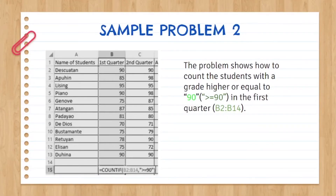In the second sample problem, we need to count the students who have a grade of 90 or below. To do this, we use: =COUNTIF(B2:B14, "<=90"). The answer to this problem is 4, because the students who received a grade of 90 in the first quarter are Deskotan, Piano, Duhina, and Lising.